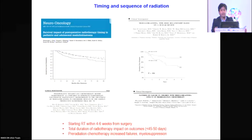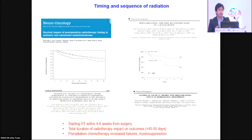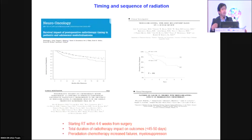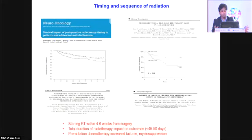Timing and sequence of radiation: radiation should be started early. Over 20 years of data confirm that treatment interruptions lead to inferior prognosis. Total radiation duration is around 45 to 50 days, and any breaks worsen outcomes. Sufficient time — at least three to four weeks — should be given for wound healing and recovery before starting radiation. A recent publication showed that starting radiation beyond a 90-day cutoff was associated with poor prognosis.